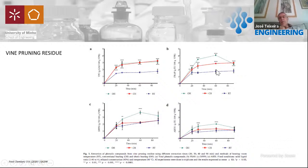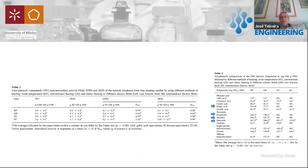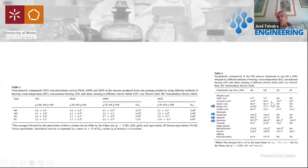We also quantified the amount of phenolics extracted by different strategies using traditional analytical techniques. Ohmic heating really improves the efficiency of the extraction process. Interestingly, we can induce some selectivity in the extraction process and extract with ohmic heating compounds that are not extracted by conventional heating.